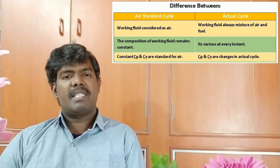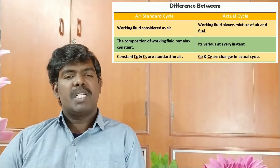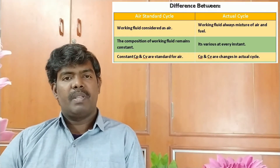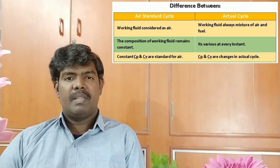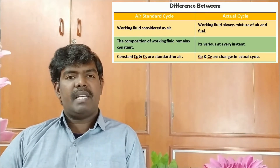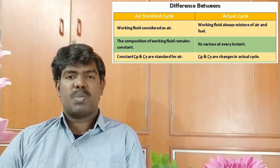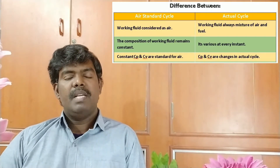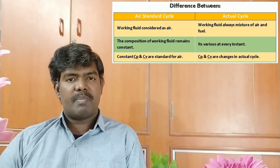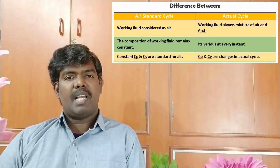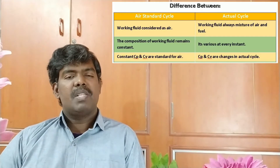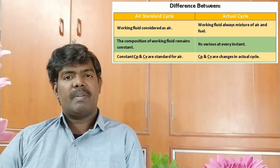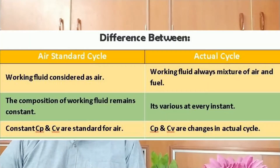The third difference: since the working fluid is air in a standard cycle, the specific heat values Cp and Cv — specific heat at constant pressure and volume — are constant. But in an actual cycle, Cp and Cv vary at every instant based on the varying input conditions.